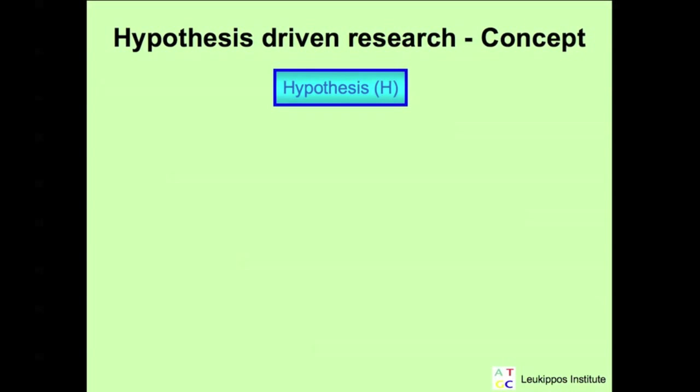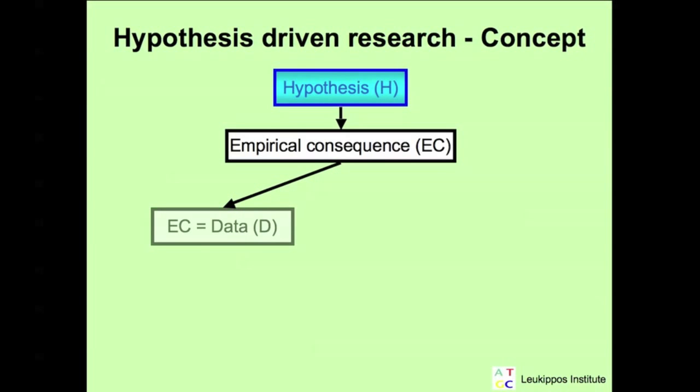The testing of a hypothesis is done by the deduction of an empirical consequence. An empirical consequence is a statement which follows logical from the hypothesis. It should be possible with the help of observations and data to decide if this statement is true or false. In the next step, we do our experiments and collect data.